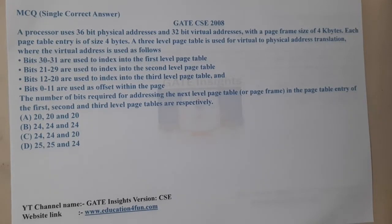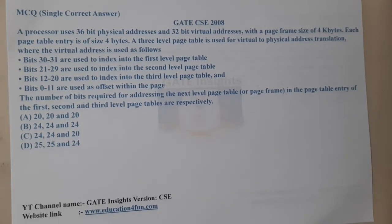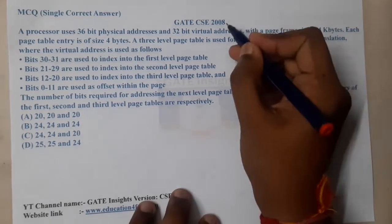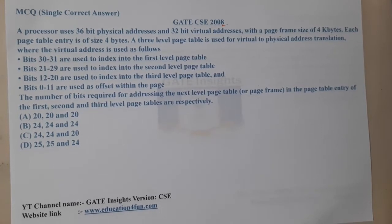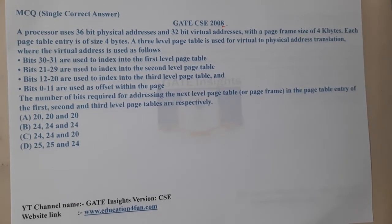Hello guys, we are back with our next lecture. In this lecture, let us go through the next question. This question belongs to GATE CSE 2008. The given question is: a processor uses a 36-bit physical address and 32-bit virtual address.